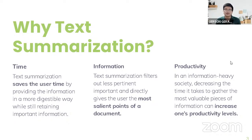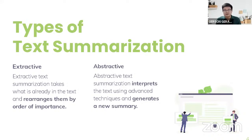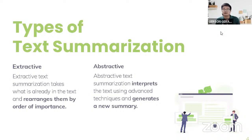What kinds of text summarization are there? Based on my research, there are two main types. The first is extractive text summarization — from the word itself — which aims to extract the most important parts of a document without altering any content. We just extract the most important words or sentences and rearrange them by order of importance in a more digestible manner for the user.